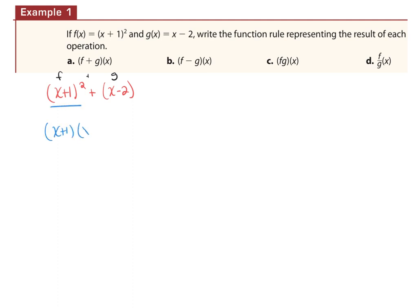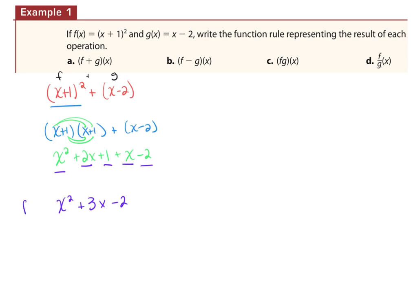That's (x + 1)(x + 1) plus (x − 2). FOILing gives x squared + 2x + 1, then plus x minus 2. Combining like terms: x squared doesn't combine with anything, 2x and 1x combine to 3x, and 1 and −2 combine to −1. So f + g = x squared + 3x − 1.